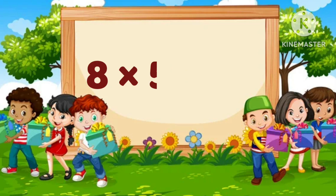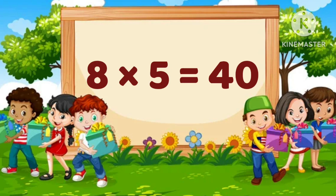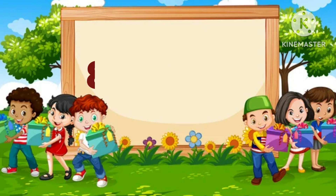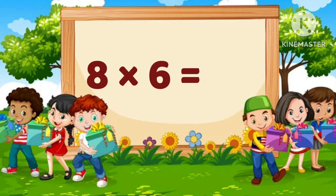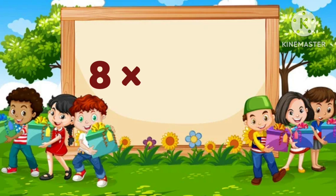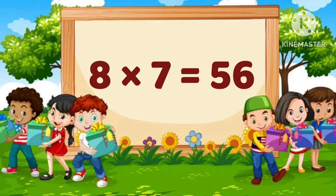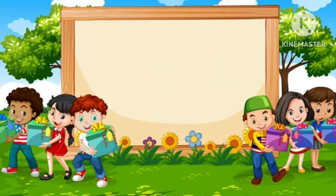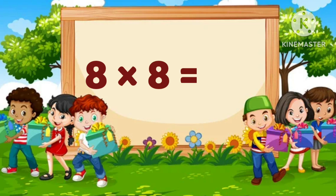8 fives are 40. 8 sixes are 48. 8 sevens are 56. 8 eights are 64.